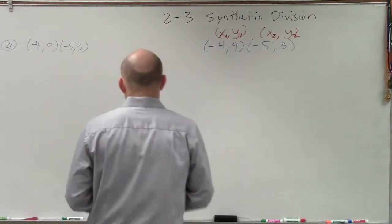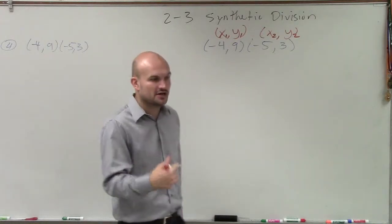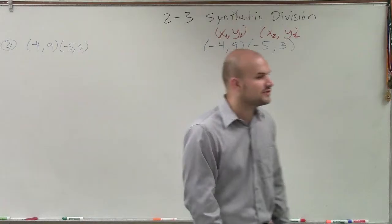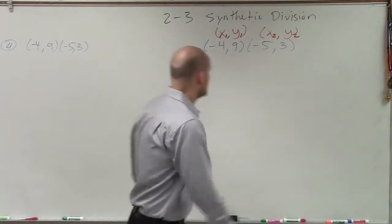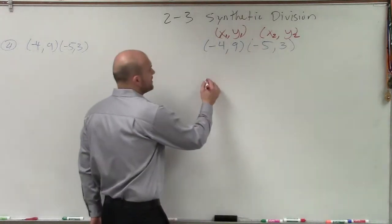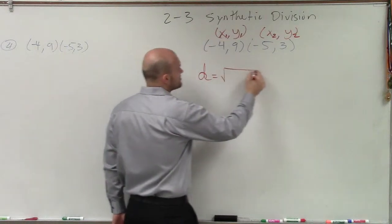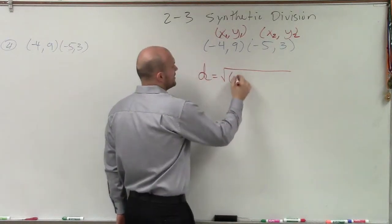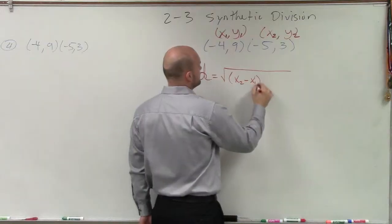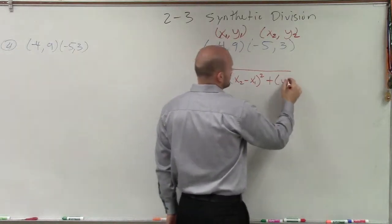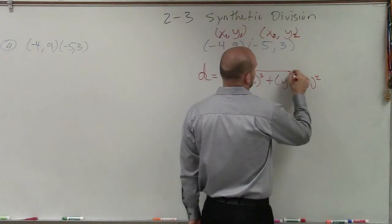Now let's take a look at the distance formula. This is something you're going to want to make sure you have written down, and we're going to talk more about it on Monday as well. If I want to find the distance between two points, that becomes the square root of (x2 minus x1) squared plus (y2 minus y1) squared.